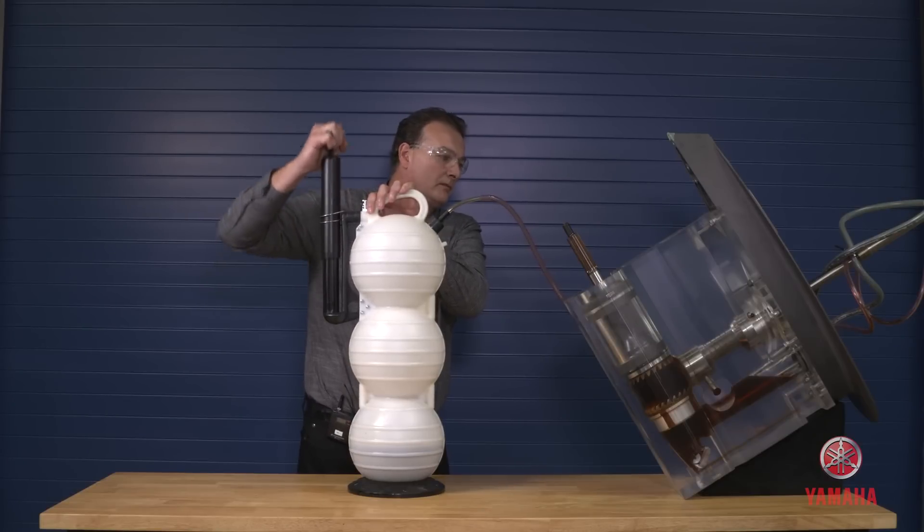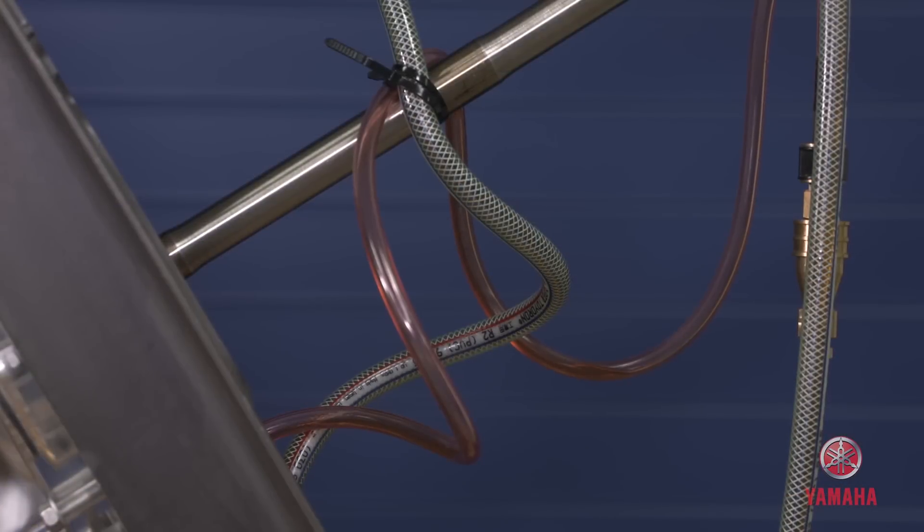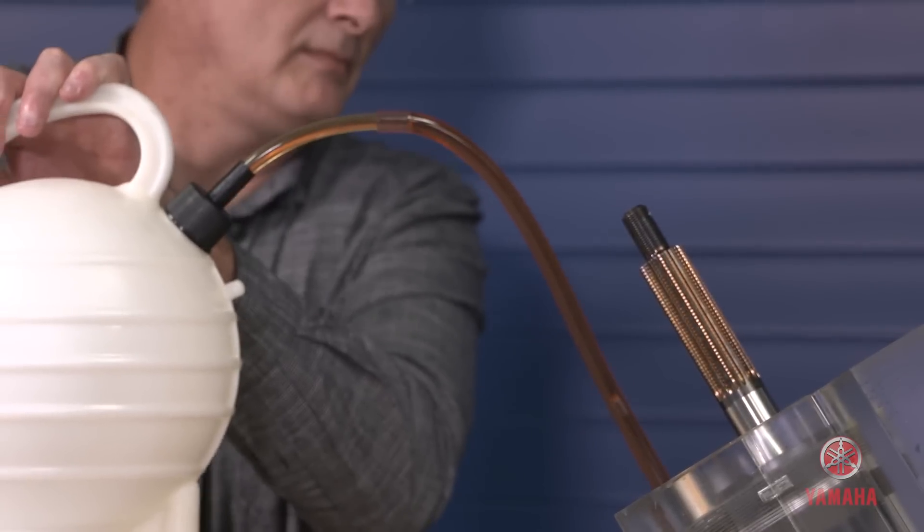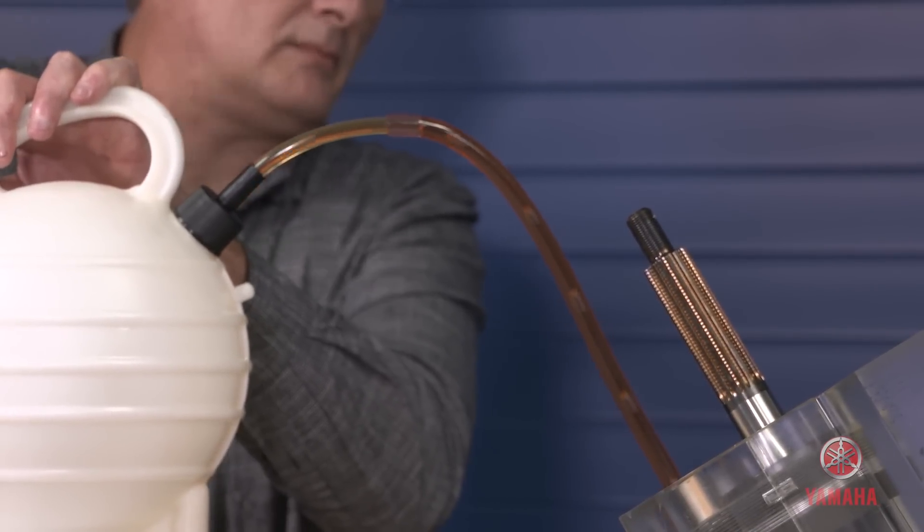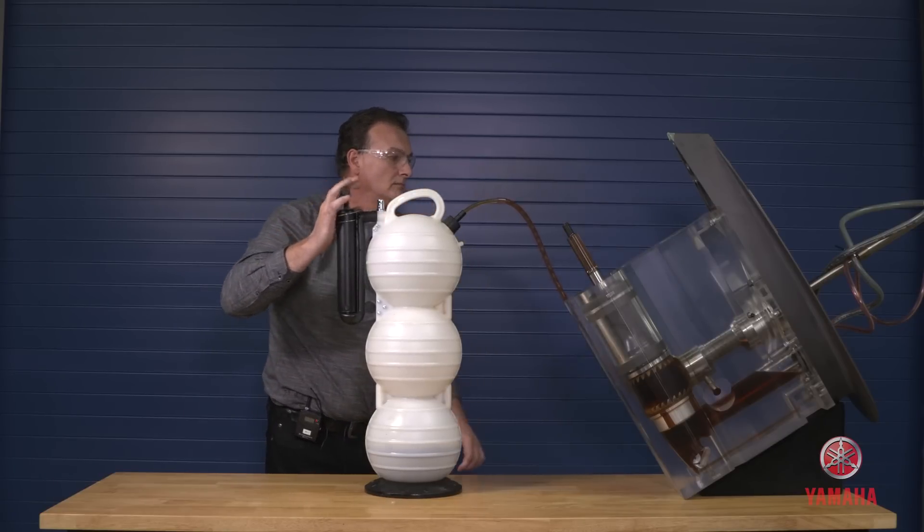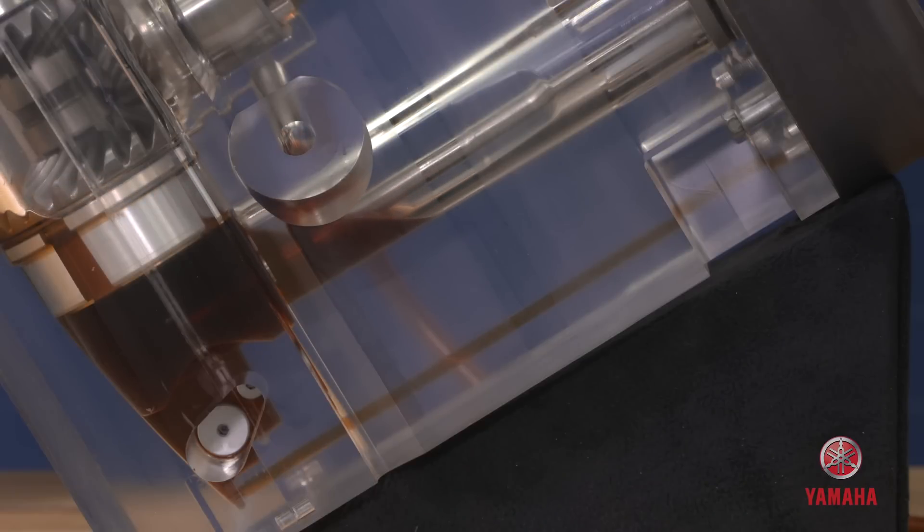The air pumped out of the extractor will create a vacuum to pull the oil out of the gear case. Once the oil begins to flow into the extractor, you can stop pumping. As long as the connections on the extractor and hoses are sealed, the vacuum will continue to function until all the oil is extracted.